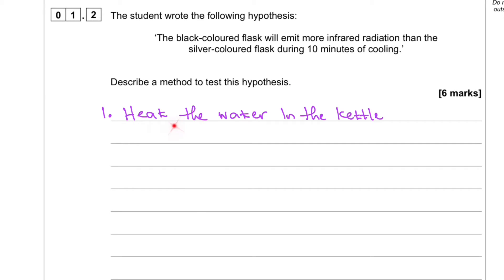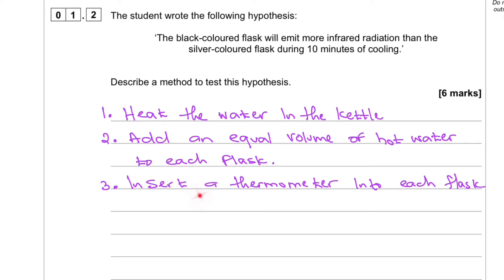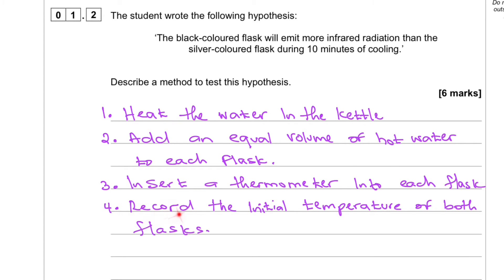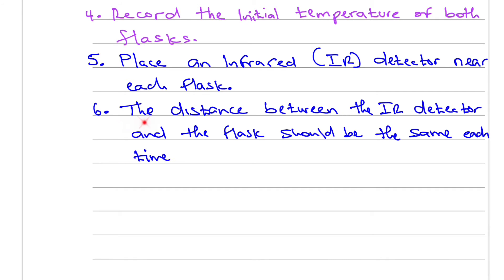First, heat the water in the kettle. Second, add an equal volume of hot water to each flask. Third, insert a thermometer into each flask. Fourth, record the initial temperature of both flasks. Fifth, place an infrared IR detector near each flask. The distance between the IR detector and the flask should be the same each time.